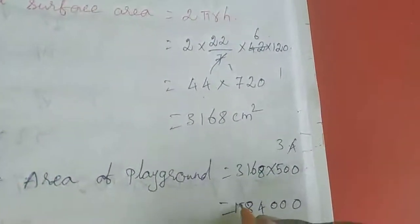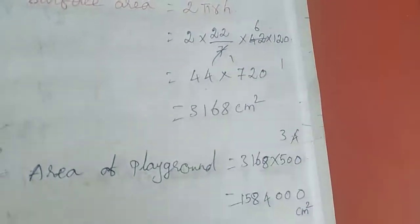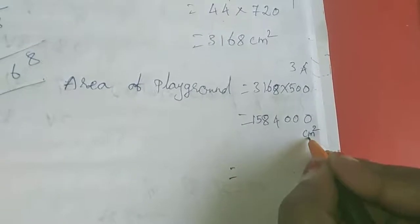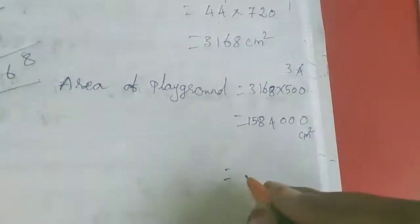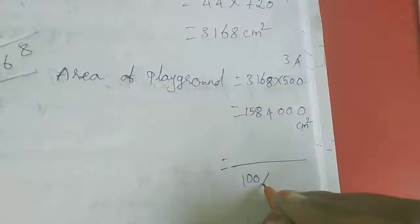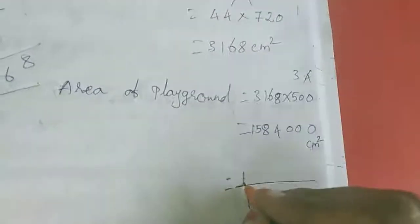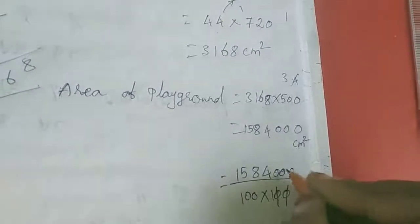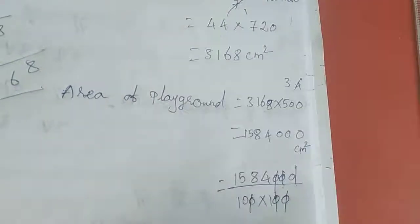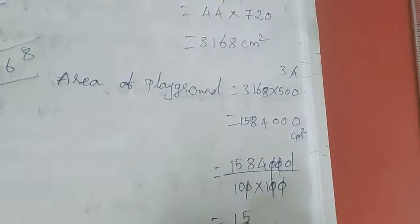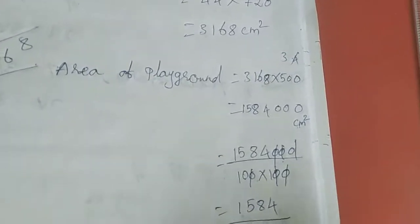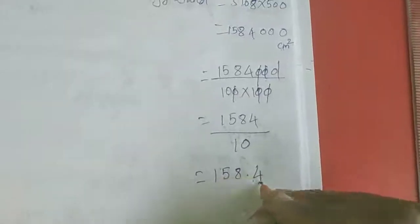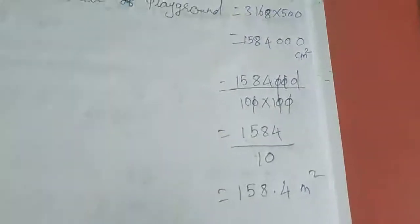1,584,000 cm square, but they are asking in meter square. So centimeter square to meter square, divide by 100 into 100. This value 12, 12, 10, 10. So 1584 divided by... we can write as 1584 meter square. This is the answer for fourth sum.